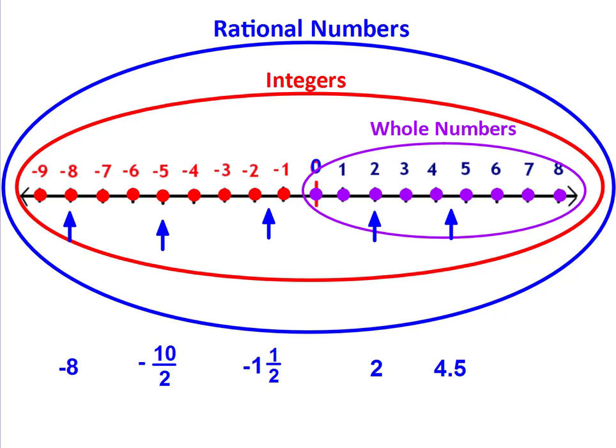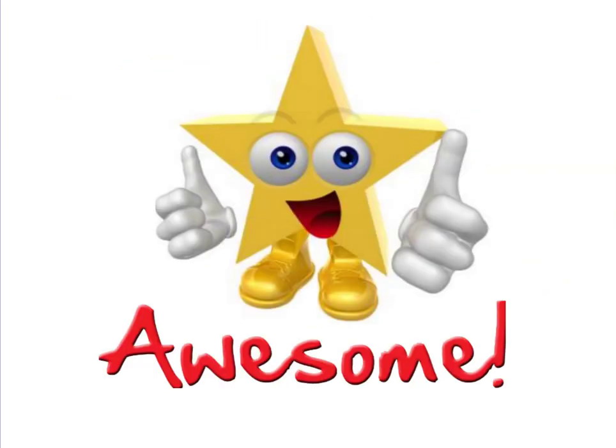Negative ten halves is tricky. It's an integer because it's an improper fraction, and if you divide the numerator by the denominator, you get negative five. Negative five is an integer, and if it's an integer, it's also a rational number. You did a great job.